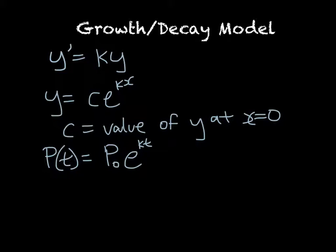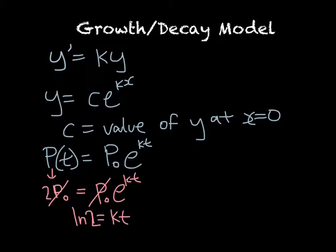Often with these models, we want to know how long it takes a population to double. So what we can do is for p of t, we'll write 2 times the initial population equals the initial population times e to the kt. Then it doesn't matter what our initial population is because that'll cancel out. And then we're left with the ln of 2 is equal to kt. So the time it takes the population to double, I'll just denote that as t double, is equal to the ln of 2 over k.